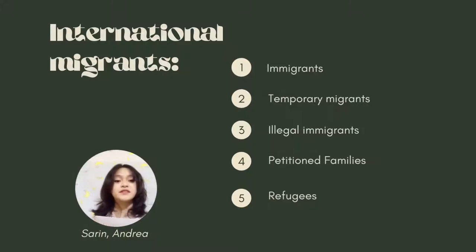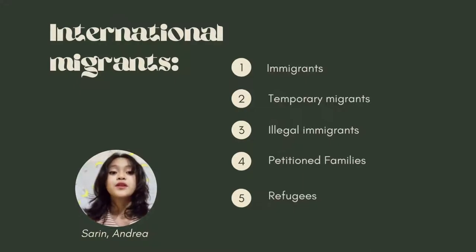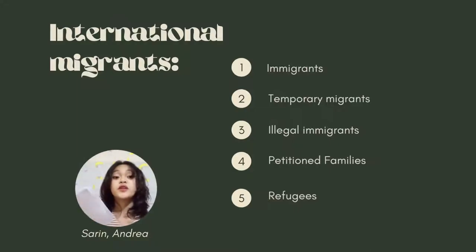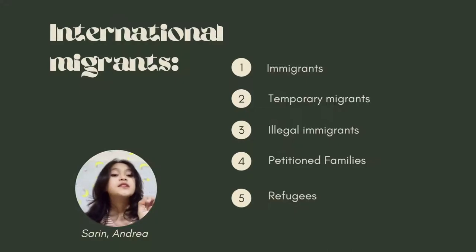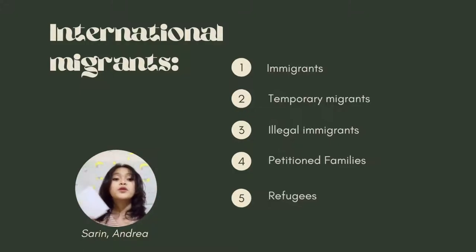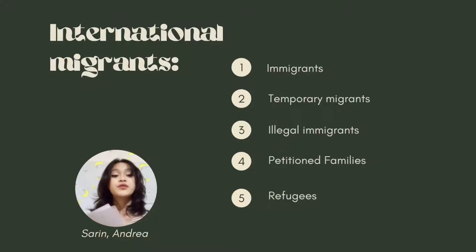Hi, my name is Andrea Jean Pizarin. Before we go to our topic, let's review international migration. According to the previous reporter, international migration is when people cross the borders of one country to another. It can be broken down into five groups: immigrants, temporary migrants, illegal migrants, migrants whose families petitioned them to move to another country, and lastly refugees, also known as asylum seekers. For my report, I will discuss the first and second types: immigrants and temporary migrants.